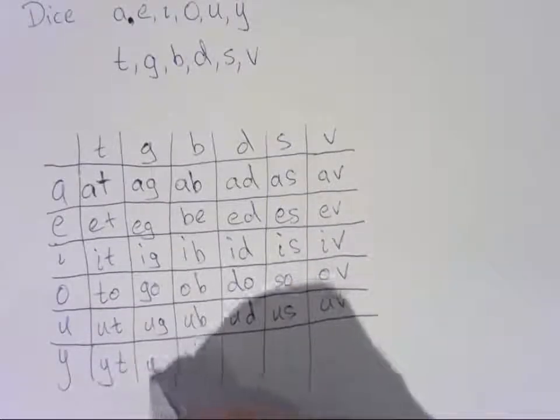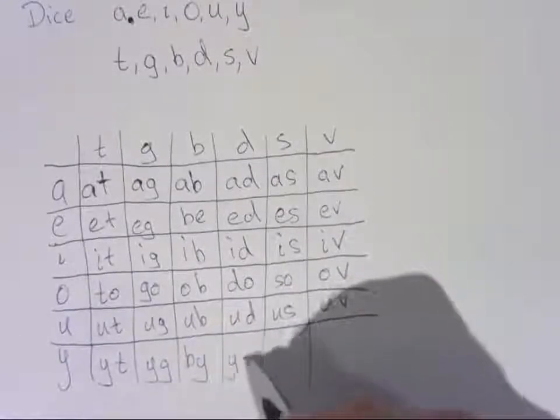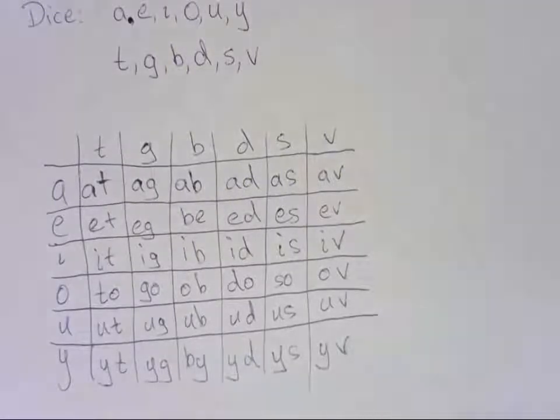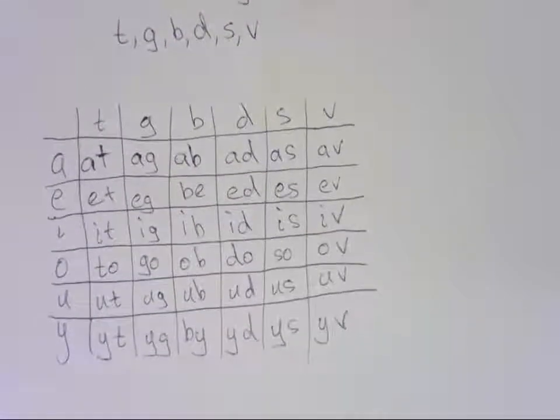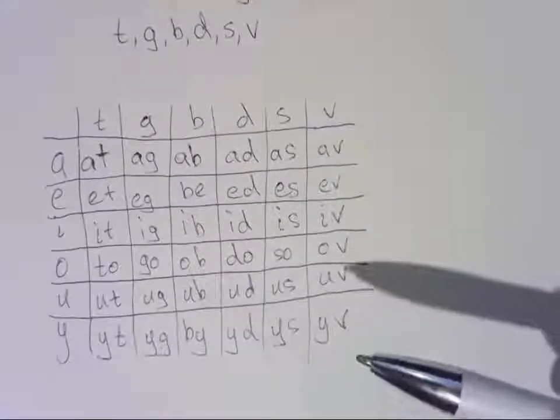Y, T, Y, G, I'll write this one as B, Y for by, Y, D, Y, S, and Y, V. So that's all the possible things that could come up when we roll these two dice, the vowel dice and the consonant one.